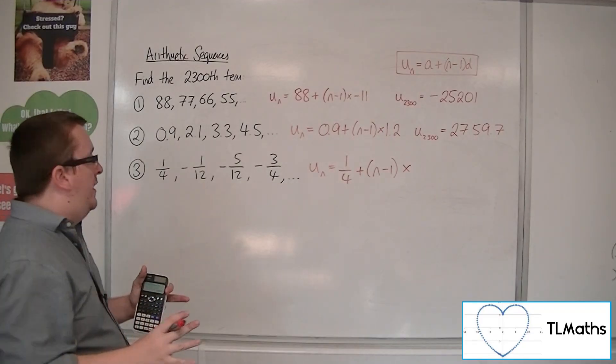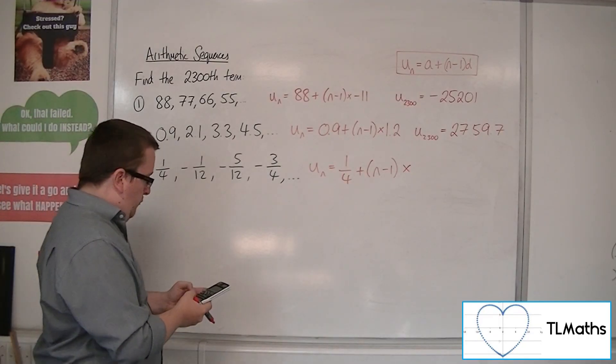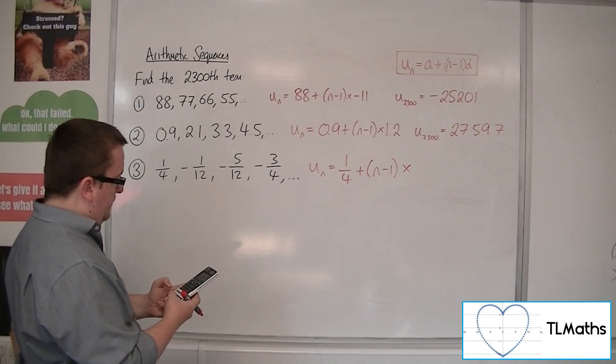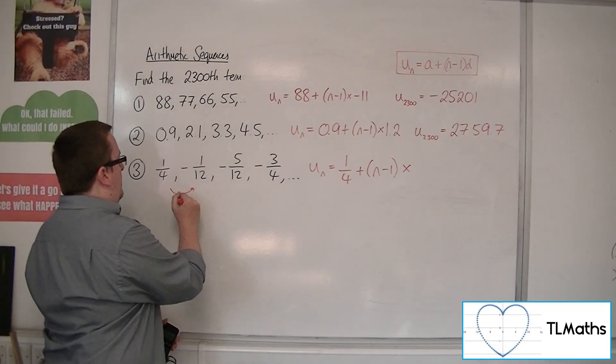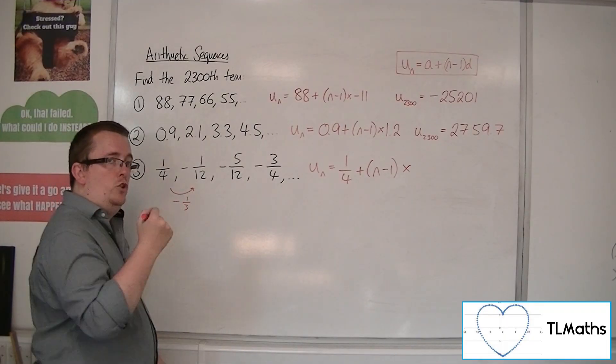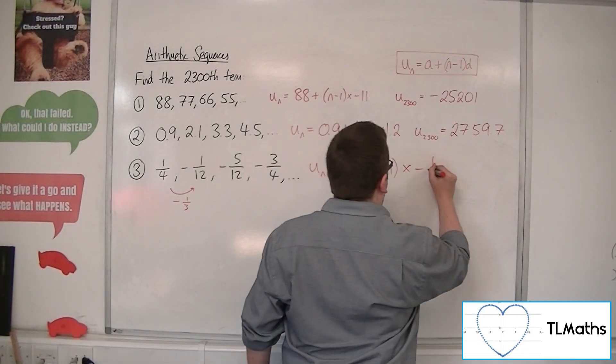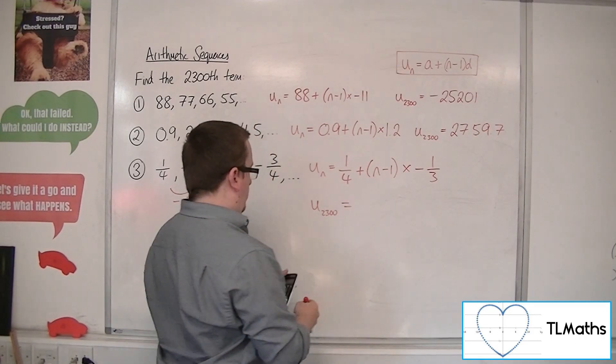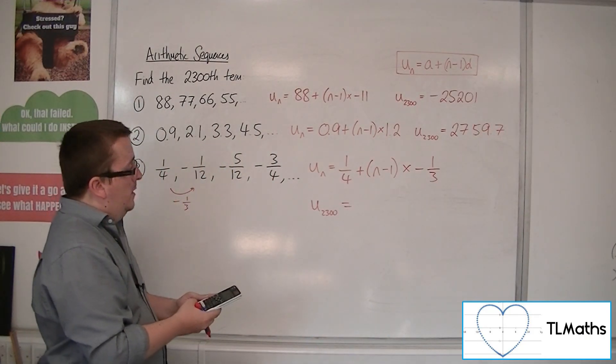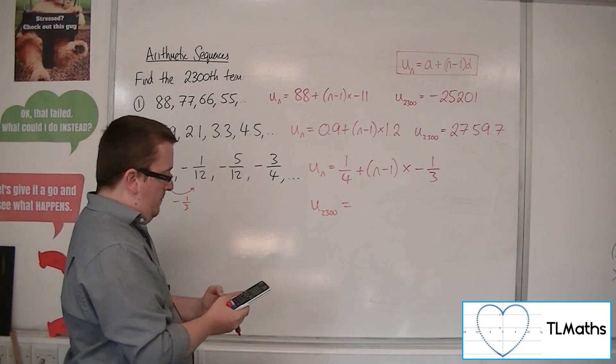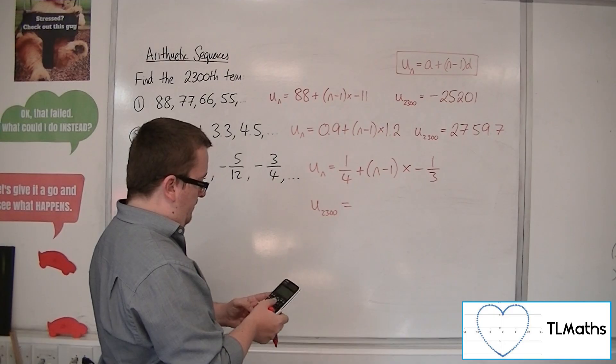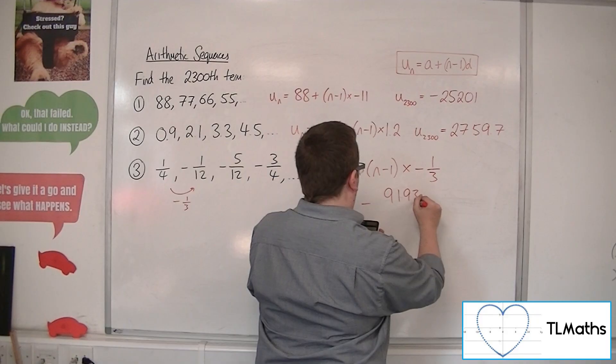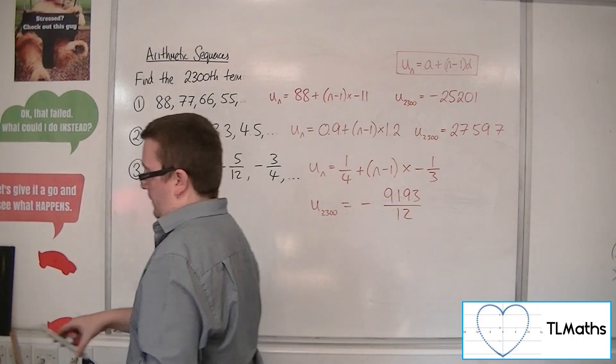Now the common difference isn't so obvious here. So if we do minus 1 twelfth, so we take the second term and then take away the first term, that gets me minus a third. So that means I'm taking a third each time. So that's my common difference. So u2300 is one quarter, plus 2300 take away 1, times by minus a third. And that gets me minus 9193 over 12.